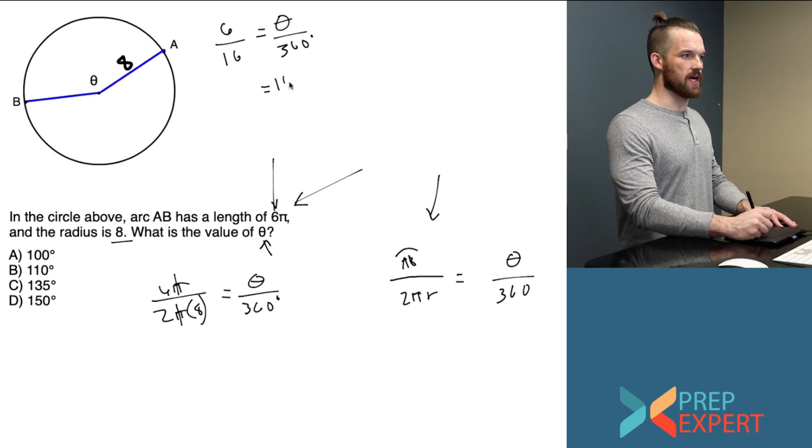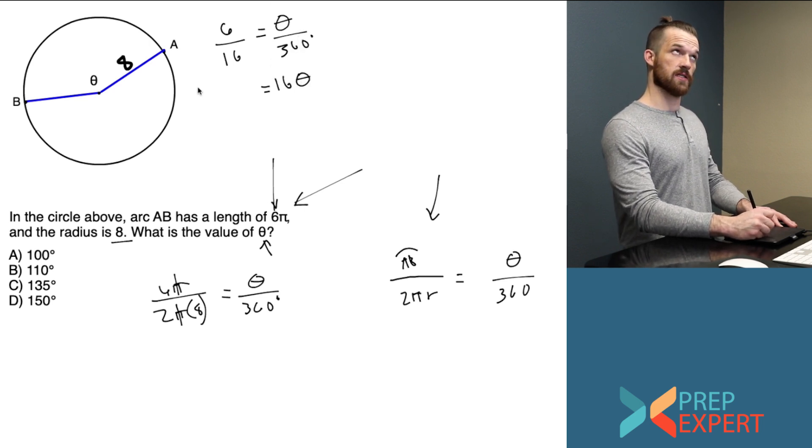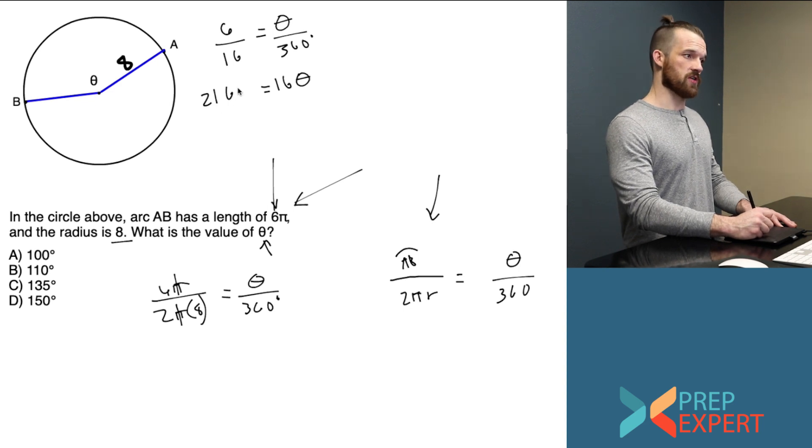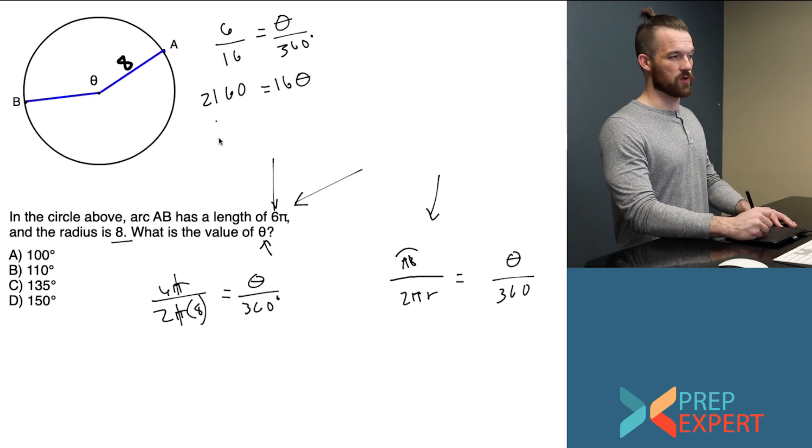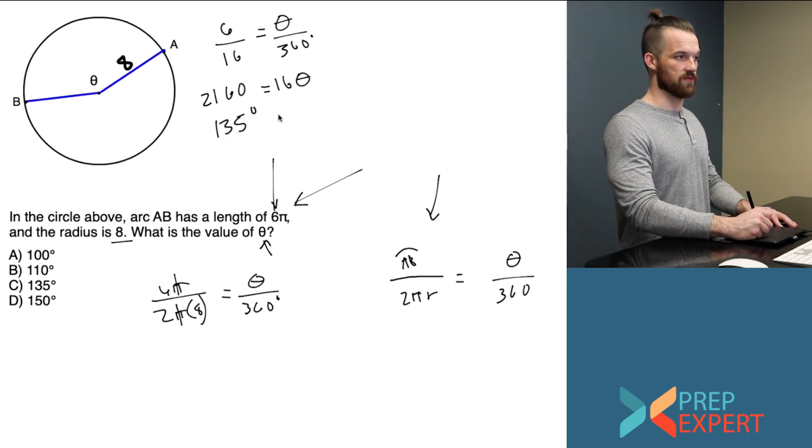So I'm just going to simplify. I know these π symbols cancel and what I'm left with is 6 over 16 equals theta over 360. If I cross multiply here I get 16 theta on the right. On the left I'm going to get 2160. And then if I divide each side by 16 I'm going to get 135 degrees for theta.